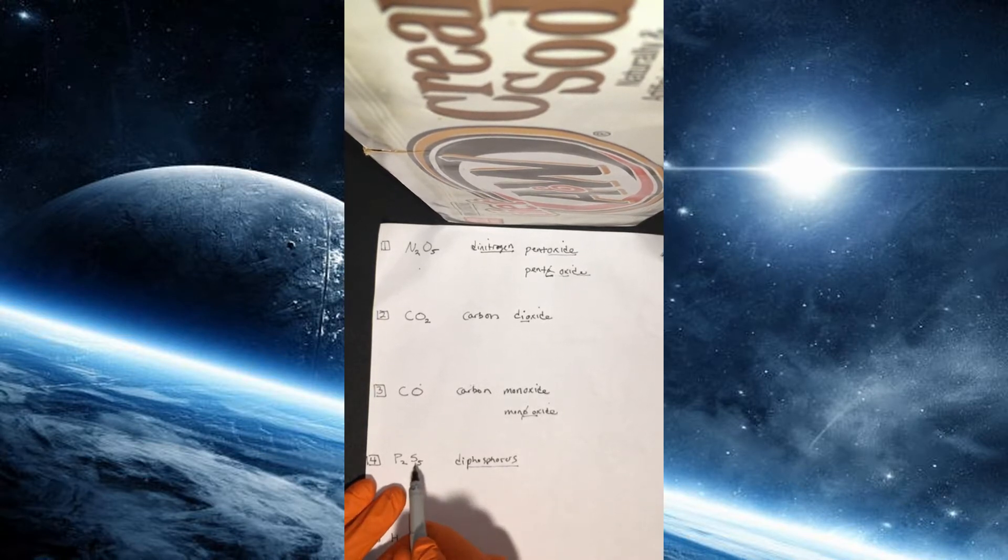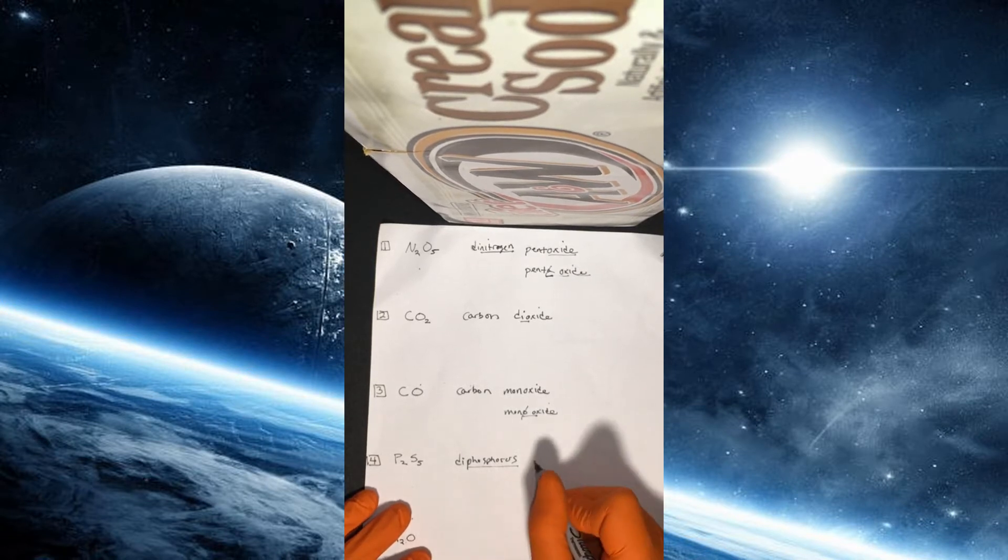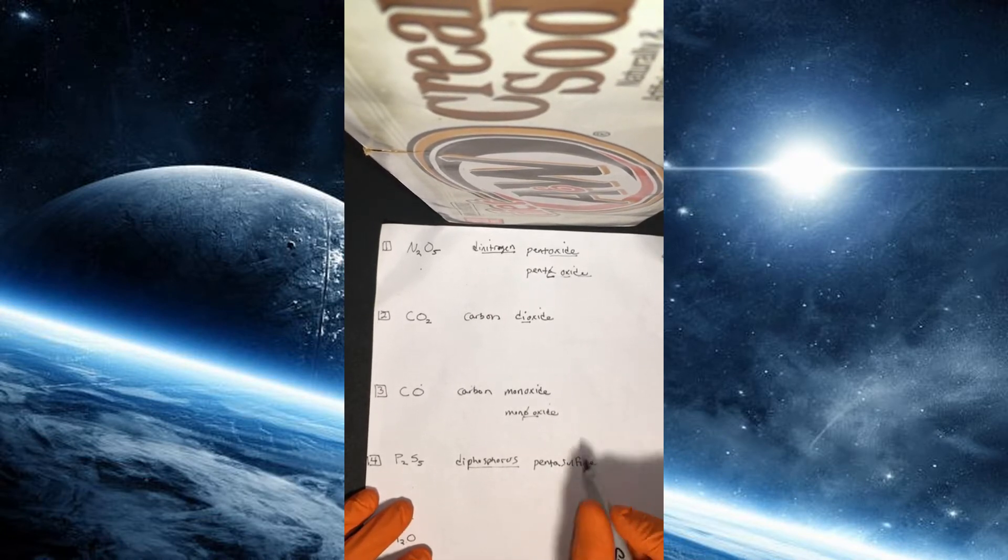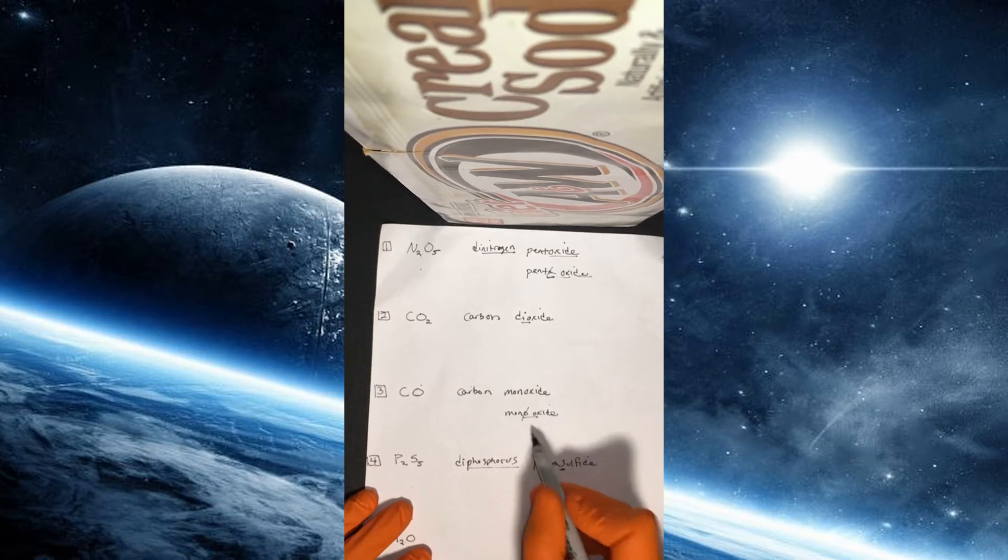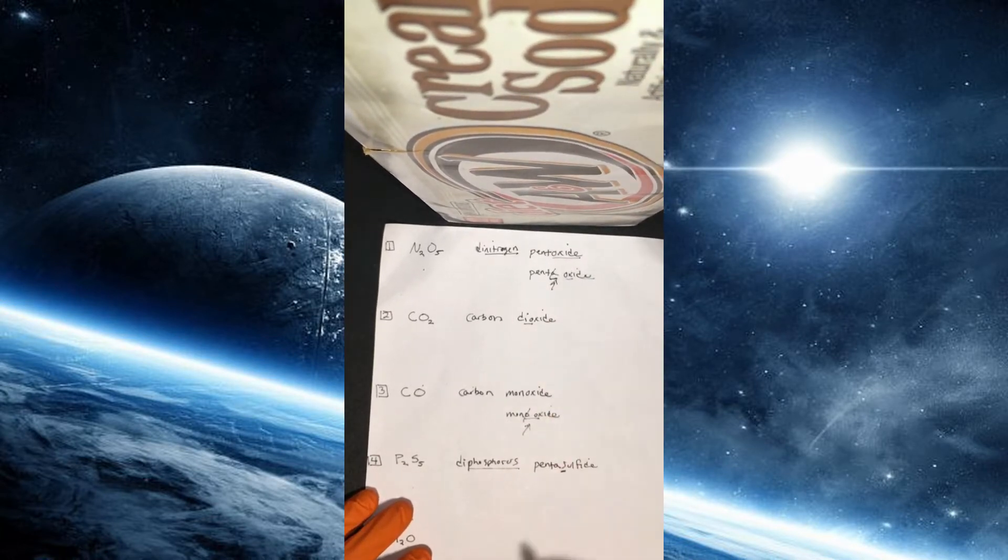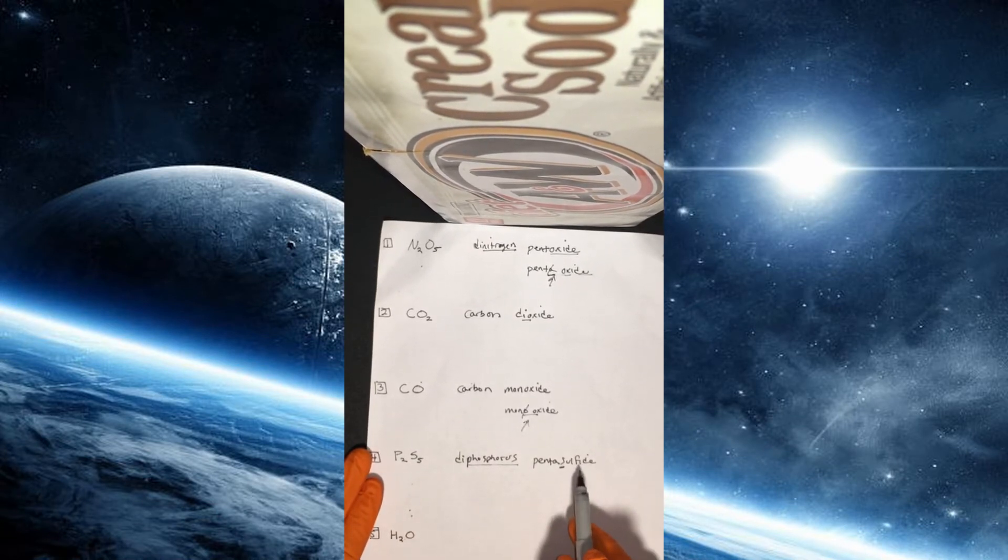However, the second element is sulfur, so we'll have to name this one according to its anion. So sulfur as an anion would be sulfide. And there's five of them, so we're going to put penta and then sulfide. And again, in this case, because sulfide starts with an S, we don't have to worry about these vowel rules that we had in the third example and the first one. So diphosphorus pentasulfide.